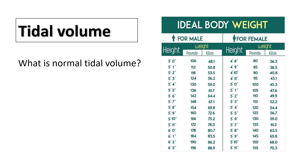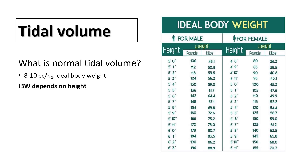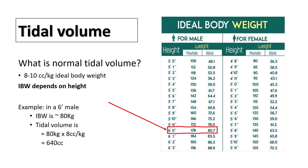Starting with tidal volumes. Normal tidal volumes are typically 8 to 10 cc per kg ideal body weight. Ideal body weight depends on height and you can use this chart to figure out what your ideal body weight is. So if you're a 6-foot person your ideal body weight is 80 kilos and your tidal volume is around 640 cc.